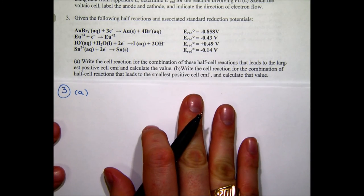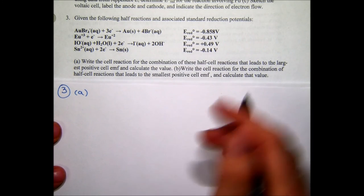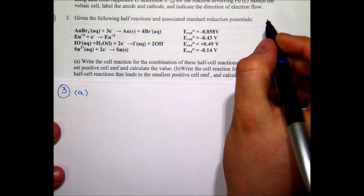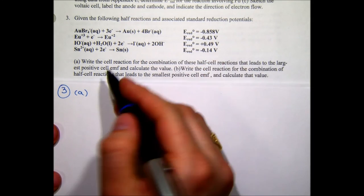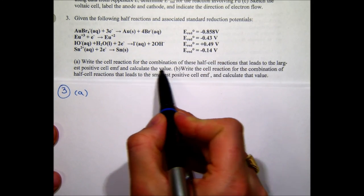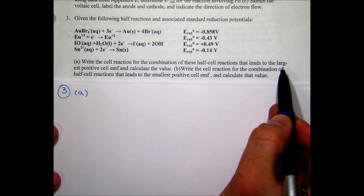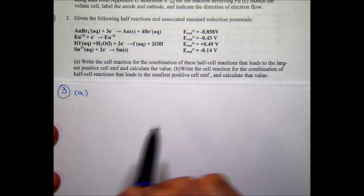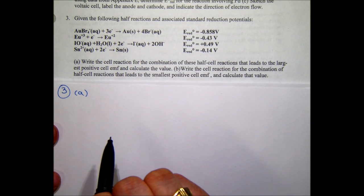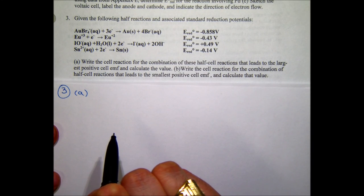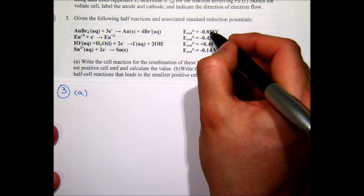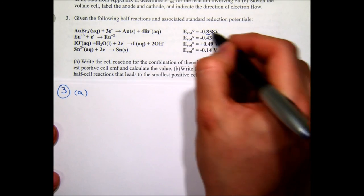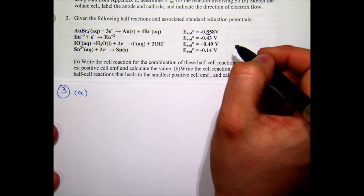Question three gives four half reactions with standard reduction potentials and asks for the combination yielding the largest positive cell EMF. We try the pair with the biggest difference: the gold bromide half reaction at +0.858 V and another half reaction. Both are written as reductions, so we must choose which undergoes reduction — the one with the most positive reduction potential — and which undergoes oxidation.